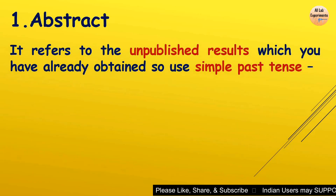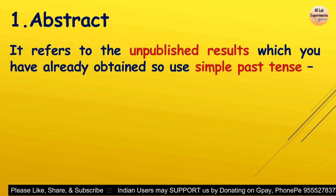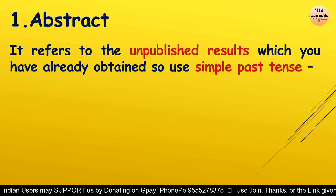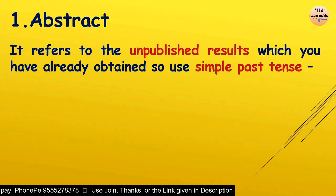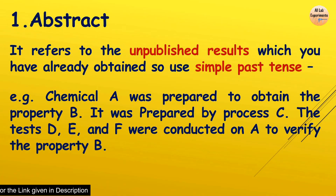Now let us move to the first part: the abstract. It refers to unpublished results which you have already obtained, so we use simple past tense. For example: 'Chemical A was prepared to obtain property B. It was prepared by process C. Tests D, E, and F were conducted on A to verify property B.' In this way, simple past tense is used throughout the abstract.